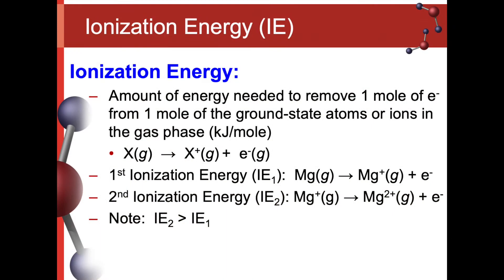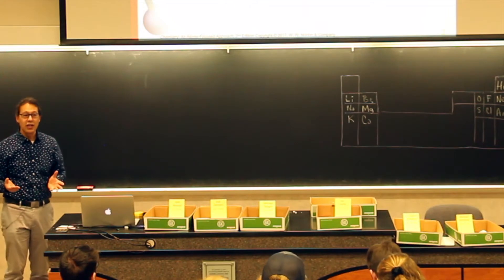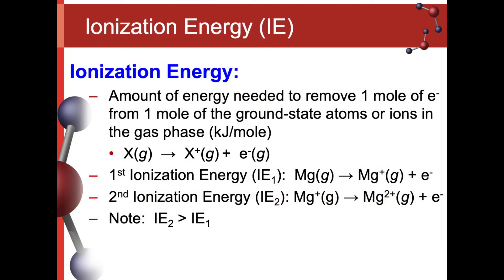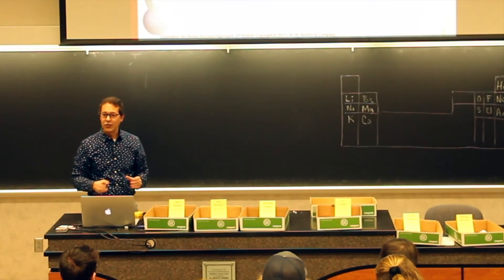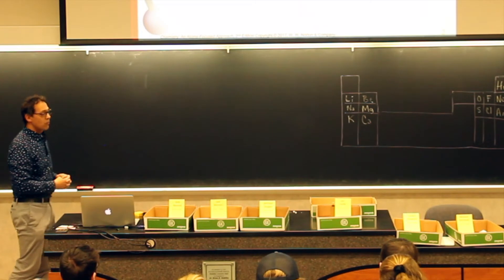Ionization energy is the amount needed to remove one mole of electrons from one mole of ground state atoms or ions in the gas phase. It just means how much energy does it take to remove an electron. We have first ionization energies, second ionization energies, and we could go third, fourth, fifth. First ionization energy is the energy to remove that first electron, second is the energy to remove the second, and every time we remove an electron, each additional one takes more energy.